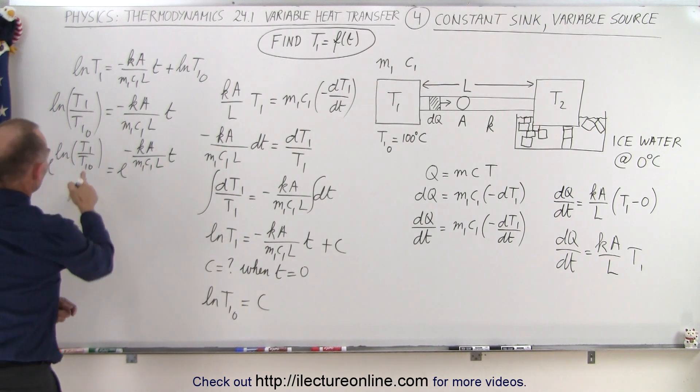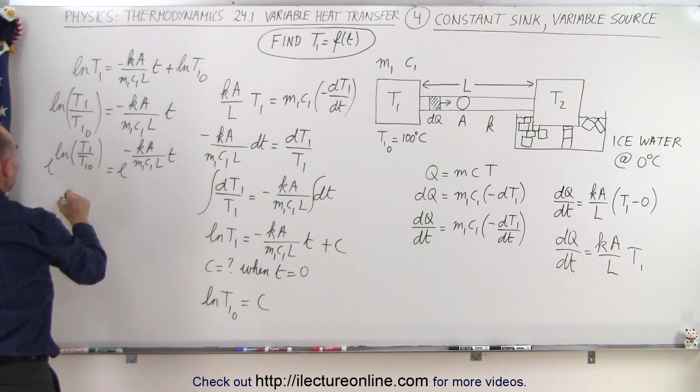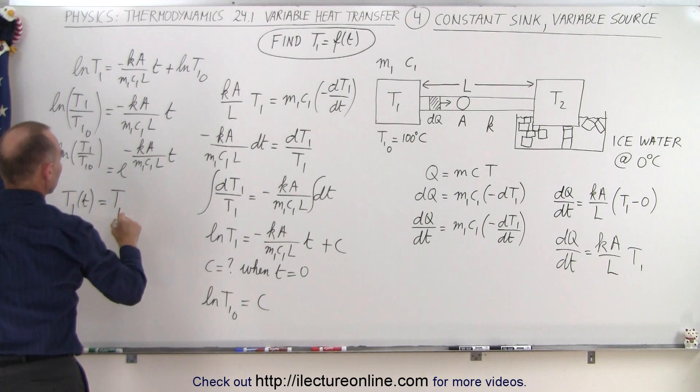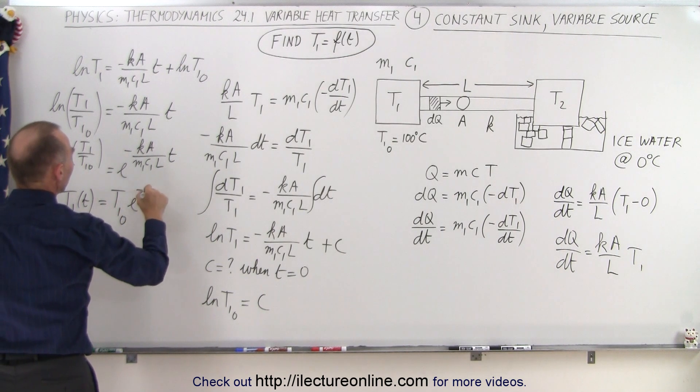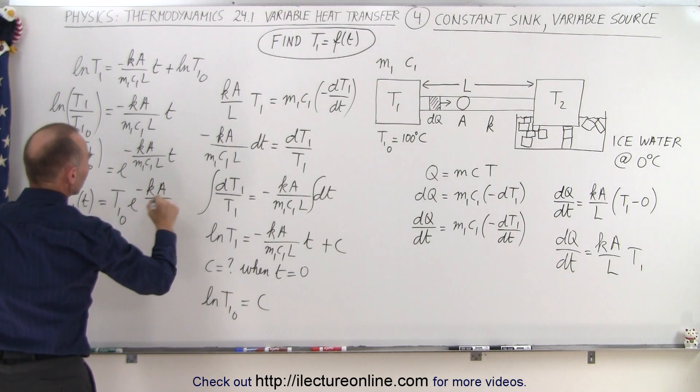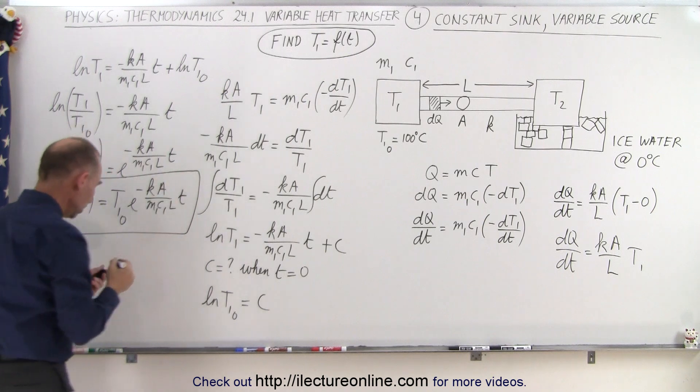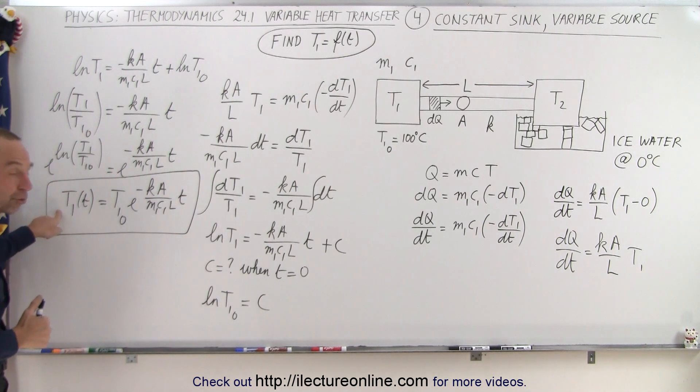And then, of course, we can say that t1 as a function of time is equal to, I can bring this across, t1 initial times e to the minus Ka over M1C1 L times t. And here we have the general equation that gives us the temperature as a function of time, starting with the initial temperature when t is equal to 0.